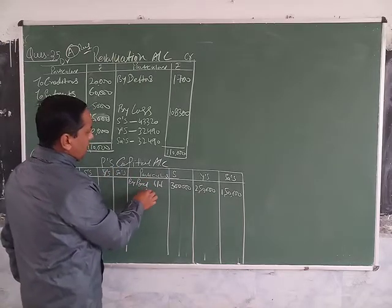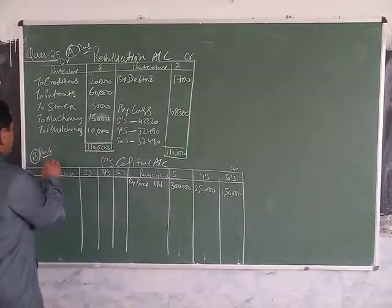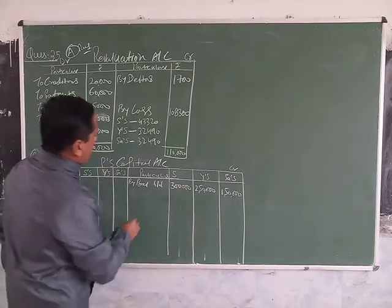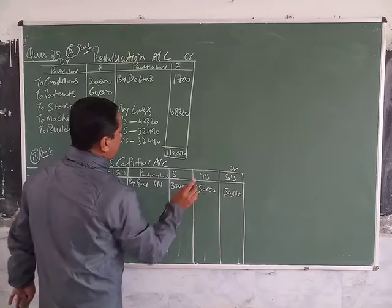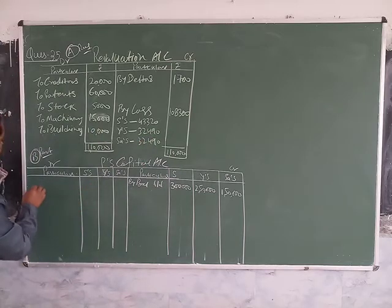We are preparing a partner's capital account. First, the balances of the partner's capital accounts are transferred to the credit side by balance brought down: 3,250 and 150. After that, we are taking the loss at the debit side.